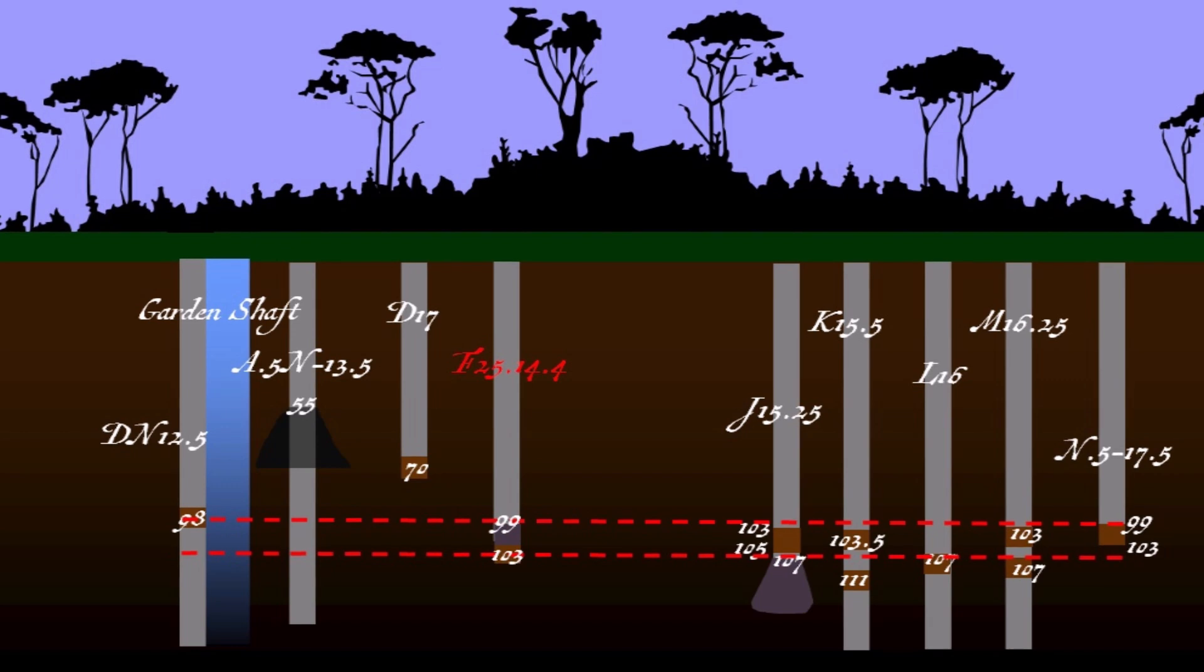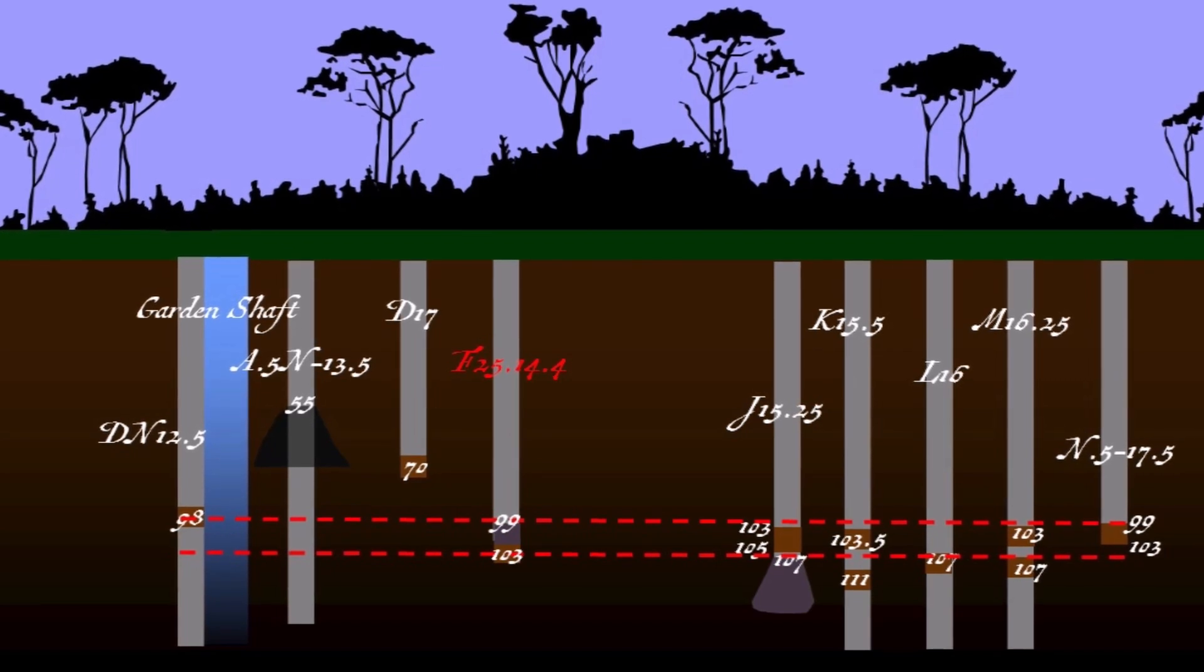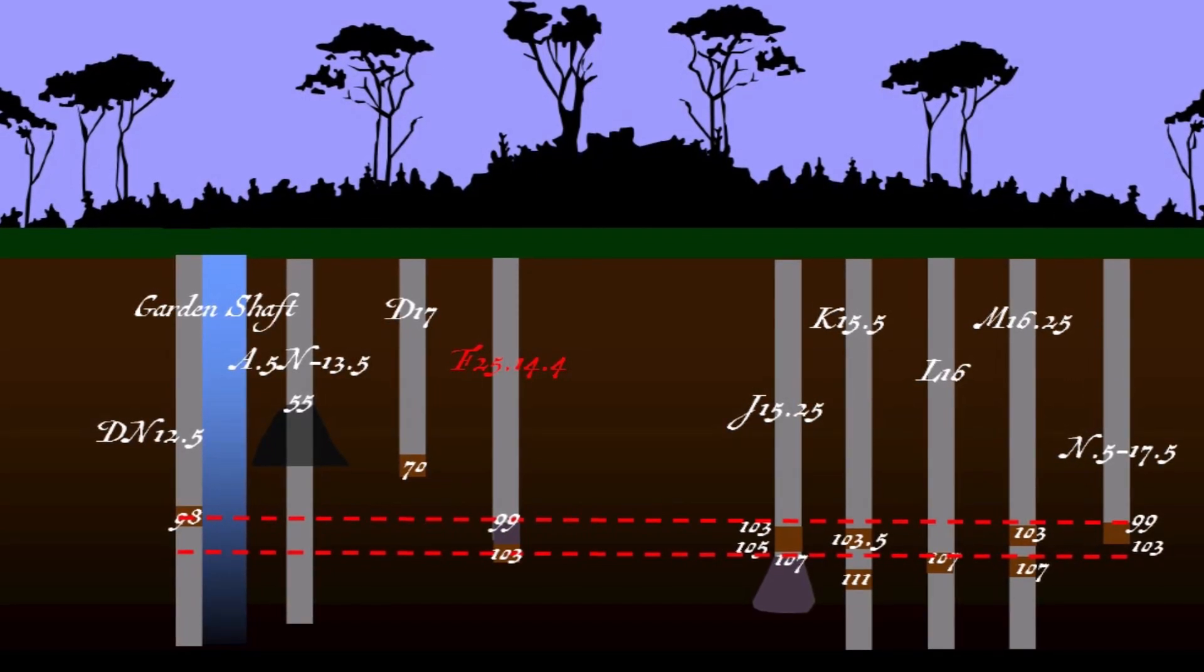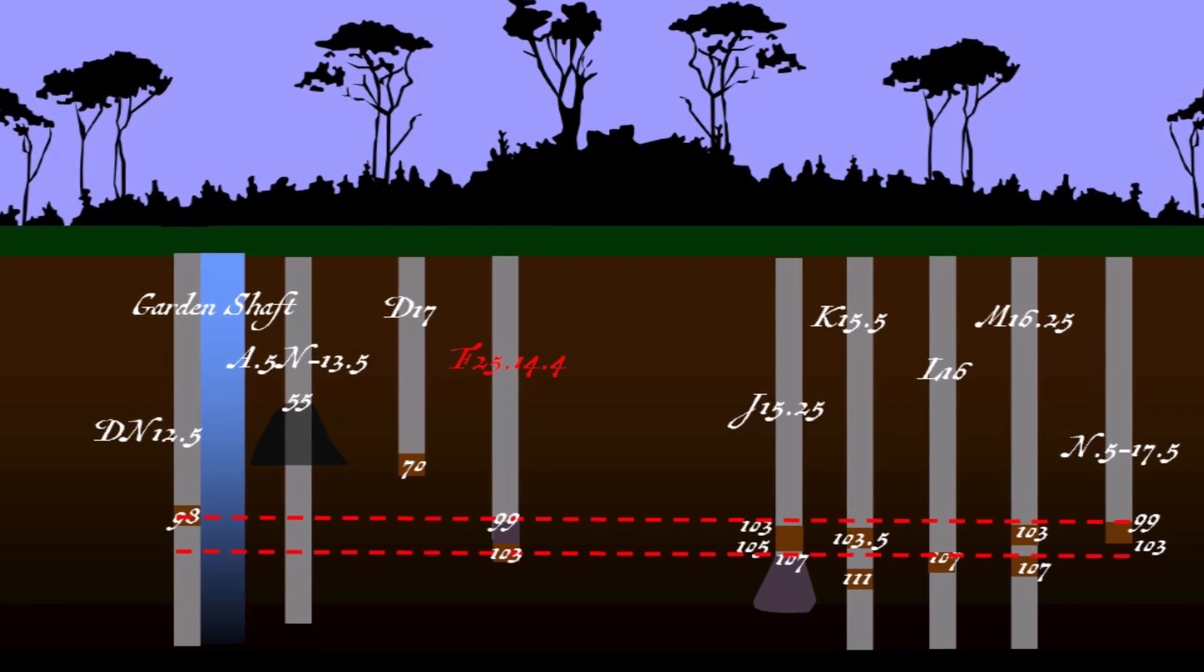If one tunnel lies at a depth of 103 to 107 feet, and the other at a depth of 99 to 103 feet, as the core samples seem to indicate,